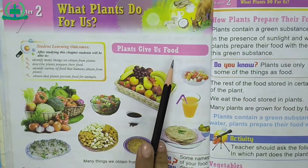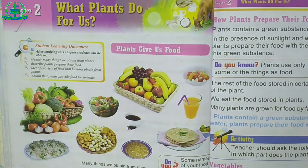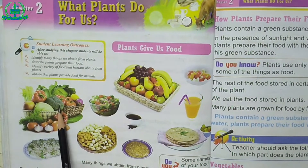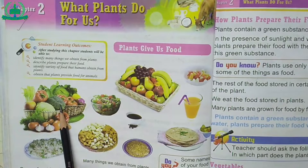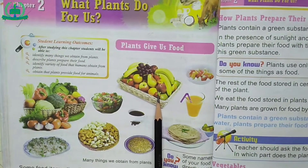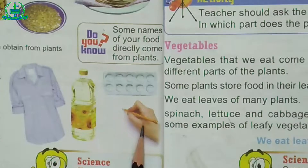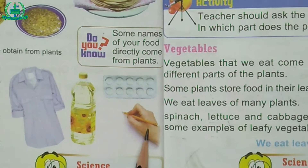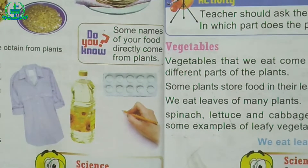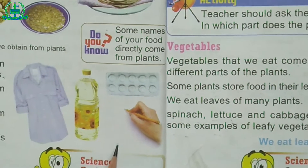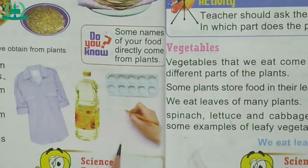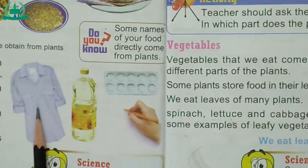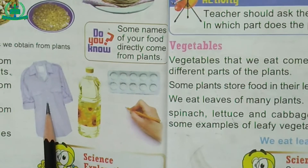Plants give us food. Some food items directly come from plants like vegetables and fruits. Our pencils come from plants. The paper we write on comes from plants. Many medicines, oil and clothes also come from plants.